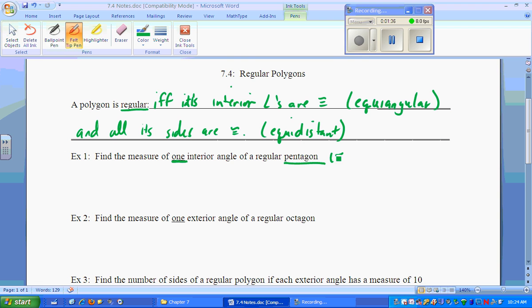First off, a pentagon has five sides. So n equals 5. We want one interior angle. We'll find the sum of the interior and then divide by the number of sides. The sum of the interior is 5 minus 2 times 180, divided by 5. The sum of the interior of a pentagon is 540. 540 divided by 5 is 108.